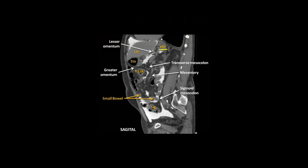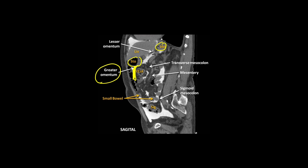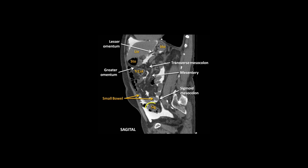On a sagittal CT section we can see all the structures: stomach and liver with the lesser omentum between them, then the transverse colon with the transverse mesocolon. Between the stomach and transverse mesocolon we have the greater omentum lying over the small bowel loops — it contains fat and hence appears dark. The fan-shaped small bowel mesentery attaches to the small bowel loops.